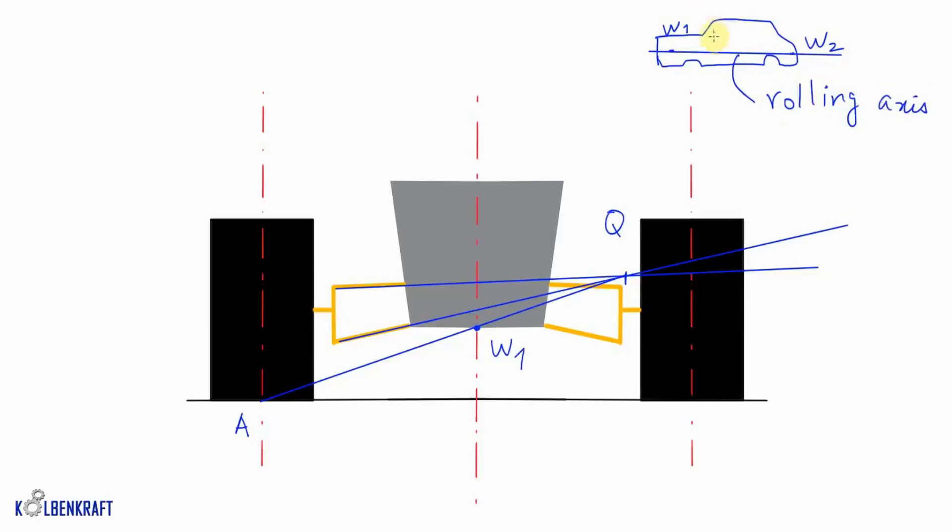Now how much will a vehicle roll, that depends on the distance between this axis and the center of gravity. So let us say that we have center of gravity somewhere over here. So this distance, let us say that it is H.